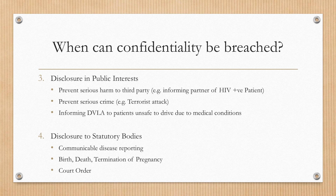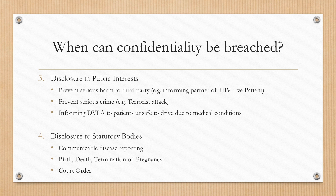We can disclose confidential information when it's in the public interest to do so. For example, if we wish to prevent serious harm to a third party — for example, a patient informs us that they are HIV positive and they're not wishing to inform their partner, and we know that they have unprotected sexual intercourse. The partner is at serious risk of harm and therefore we have a duty of care to their partner as well.